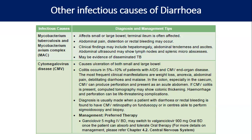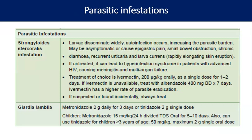If the facility is available, sigmoidoscopy and biopsy can be performed for CMV. Most of the time, if CMV is suspected, you will also find CMV retinopathy or retinitis on fundoscopy. Management is IV ganciclovir or valganciclovir orally 900 mg twice daily. Strongyloides stercoralis: larvae are disseminated widely, auto-infection occurs, increasing parasite burden. It may be asymptomatic or cause epigastric pain, small bowel obstruction, chronic diarrhea, recurrent urticaria. If untreated, it can lead to hyperinfection syndrome in advanced HIV causing meningitis and multi-organ failure. Treatment of choice is ivermectin 200 mcg/kg orally as a single dose for 1–2 days; if unavailable, albendazole 400 mg daily for seven days. If found incidentally, it should always be treated.